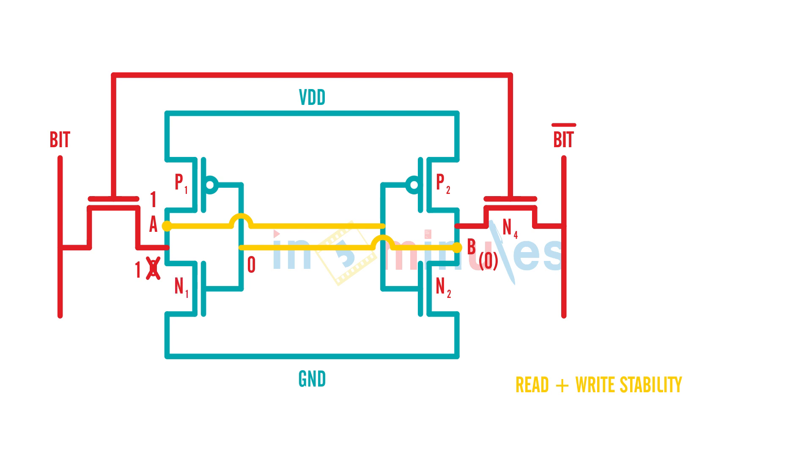W/L of NMOS transistors should be greater than - in this case NMOS transistors are nothing but N1 or N2 - should be greater than W/L of NMOS transistors.